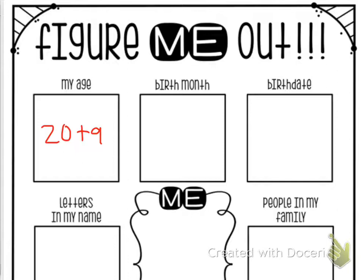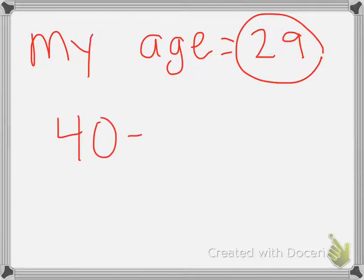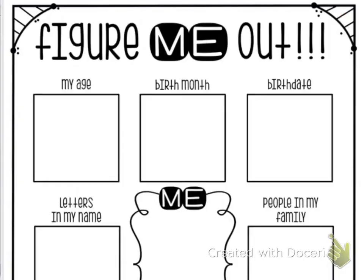Maybe I want to stump them a little more though. I'm going to say I want to use subtraction. So maybe my age is 40 minus 11, and 40 minus 11 is 29. So I could put 40 minus 11.